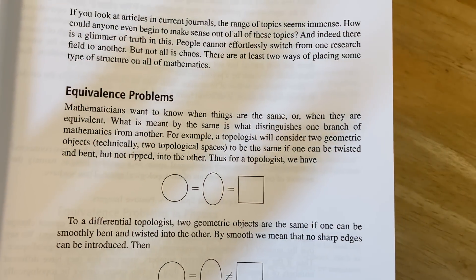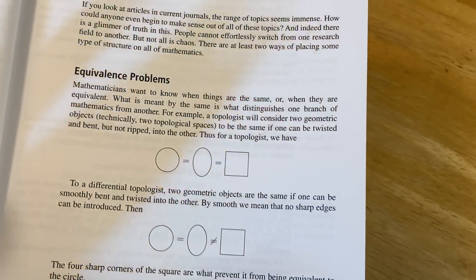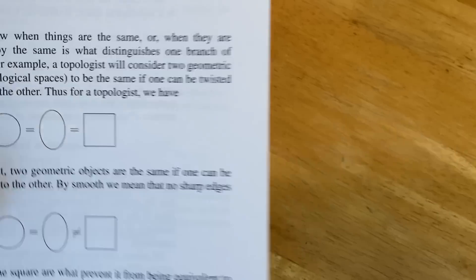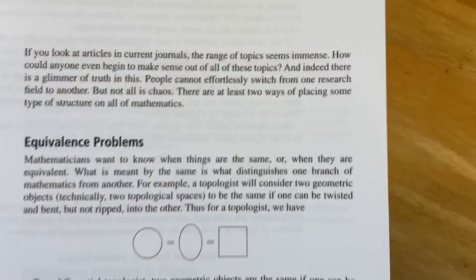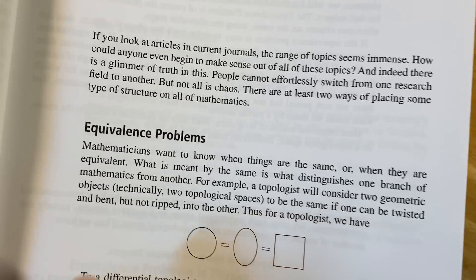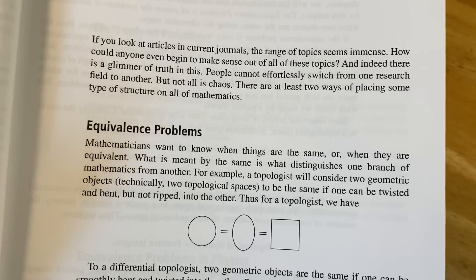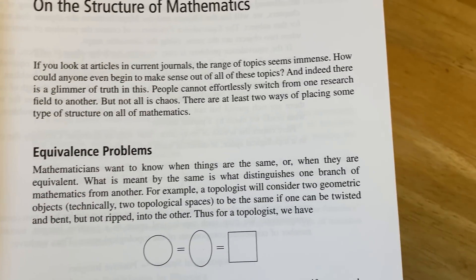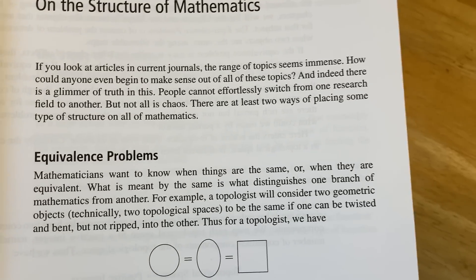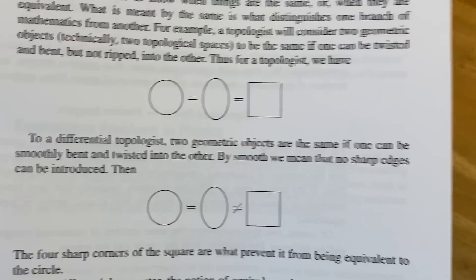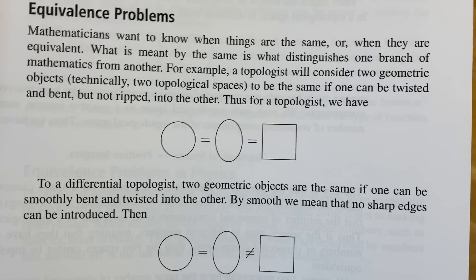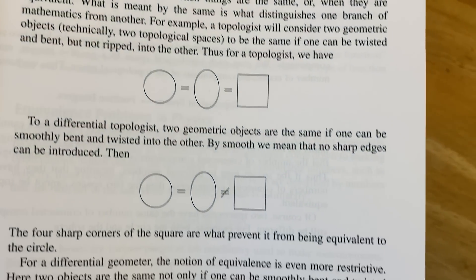Equivalence problems. So if you've studied a lot of math, just stop and think about it for a moment, right? Do you see how there are equivalence problems in different areas of math? And then that's what this is basically saying. Mathematicians want to know when things are the same or when they are equivalent. What is meant by the same is what distinguishes one branch of mathematics from another. For example, a topologist will consider two geometric objects, technically two topological spaces, to be the same if one can be twisted and bent, but not ripped, into the other. As for a topologist, we have the following.